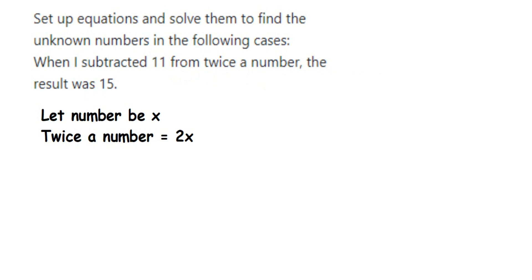First, what is given? When I subtract 11 from twice a number. We don't know the number. Whenever we solve an equation, there's something unknown we have to find. We're going to assume a variable, so in this case I'm going to assume the number to be x. And twice a number—twice means double, two times—so twice a number will become 2x.